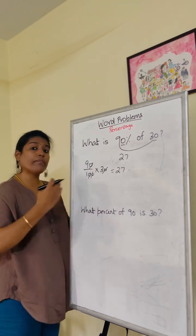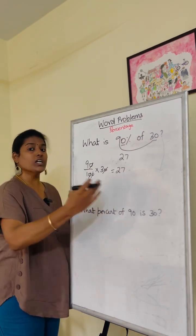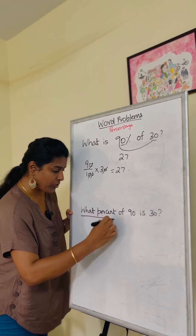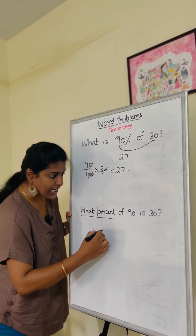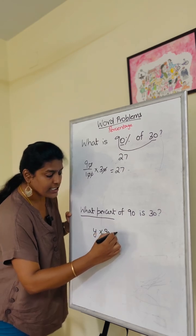The next question is, what percent of 90 is 30? This will be very easy. What percent? We know it. So, y times 90 is 30.